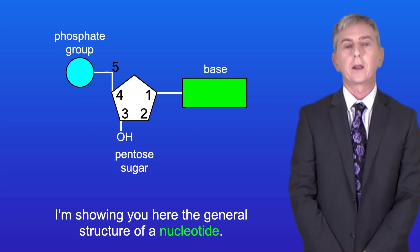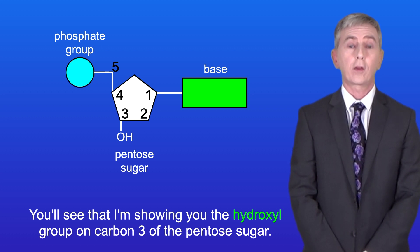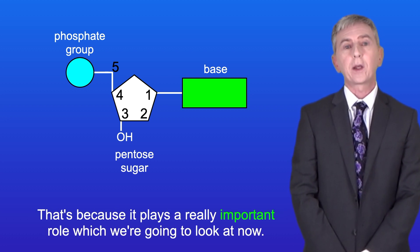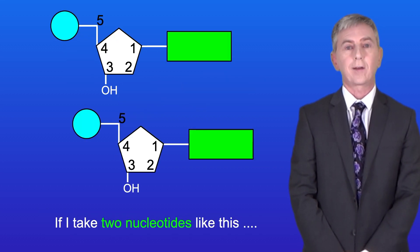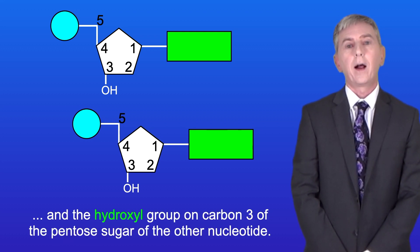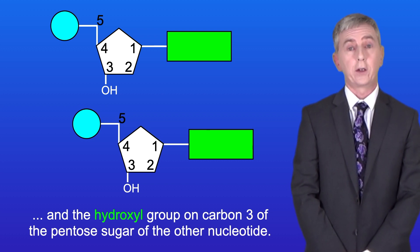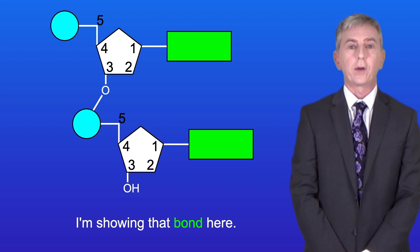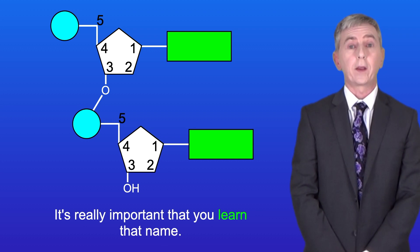I'm showing you here the general structure of a nucleotide. The hydroxyl group on carbon-3 of the pentose sugar plays a really important role. If we take two nucleotides, we can form a bond between the phosphate group of one nucleotide and the hydroxyl group on carbon-3 of the pentose sugar of the other nucleotide. The bond between two nucleotides is called a phosphodiester bond, and it's really important that you learn that name.